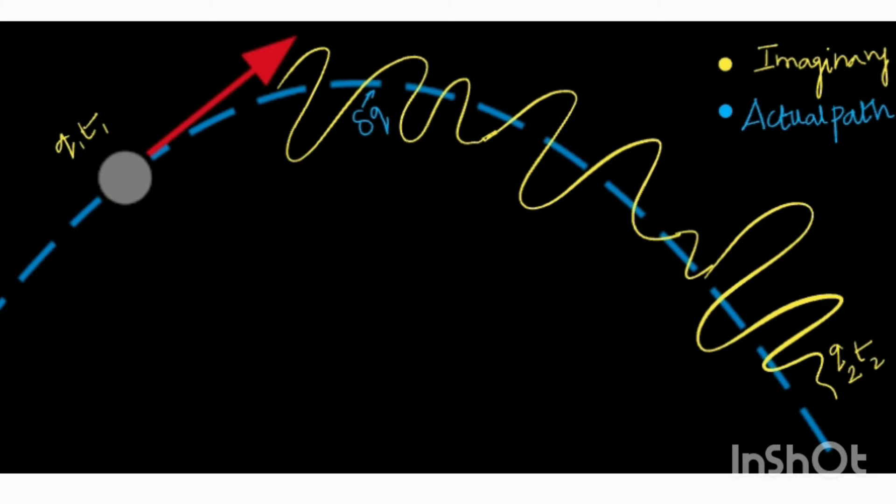From this principle, we know that the system always tries to take the least path because it always tries to consume the least amount of energy for a given time. Therefore, the path followed by the ball is always the least by means of the action. Thus, this principle is known as the least action principle.